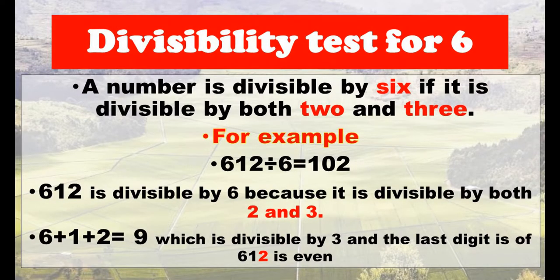Divisibility test for six: a number is divisible by six if it is divisible by both two and three. For example, 612 divided by 6 equals 102. The number 612 is divisible by six because it is divisible by both two and three. The sum of its digits: 6 plus 1 plus 2 equals 9, which is divisible by three, and the last digit, 2, is an even number.